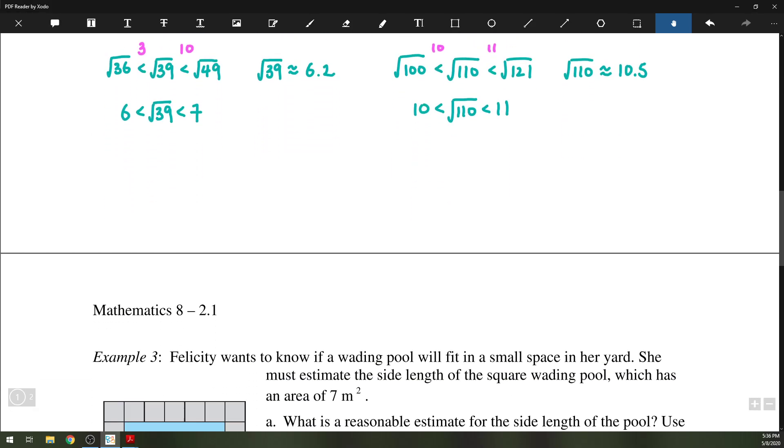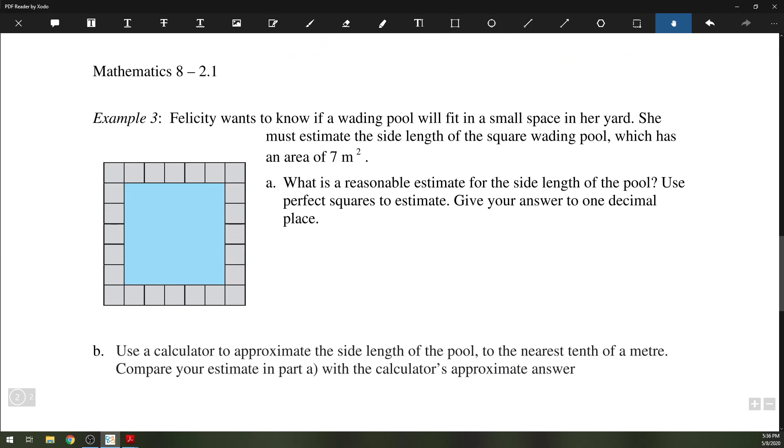Okay, so from there, just a quick word problem. Felicity wants to know if a wading pool will fit in a small space in her yard. The area is 7 square meters. We want to find the side length, which of course is a square pool. So we're looking for the square root of 7.